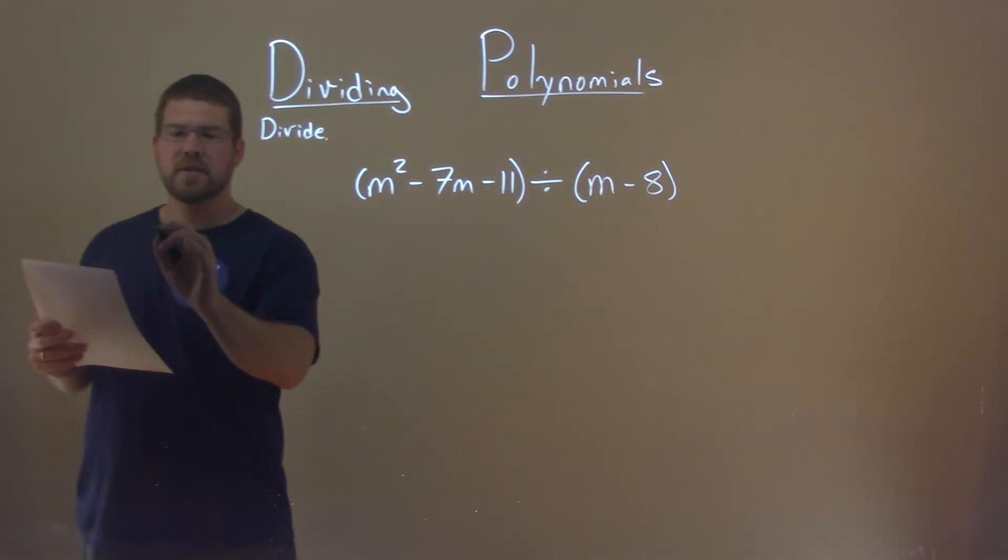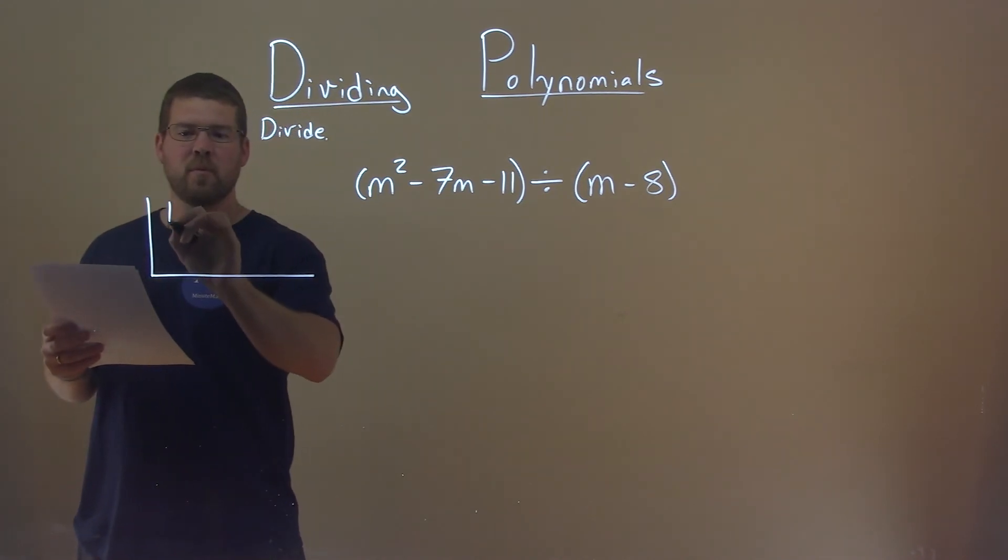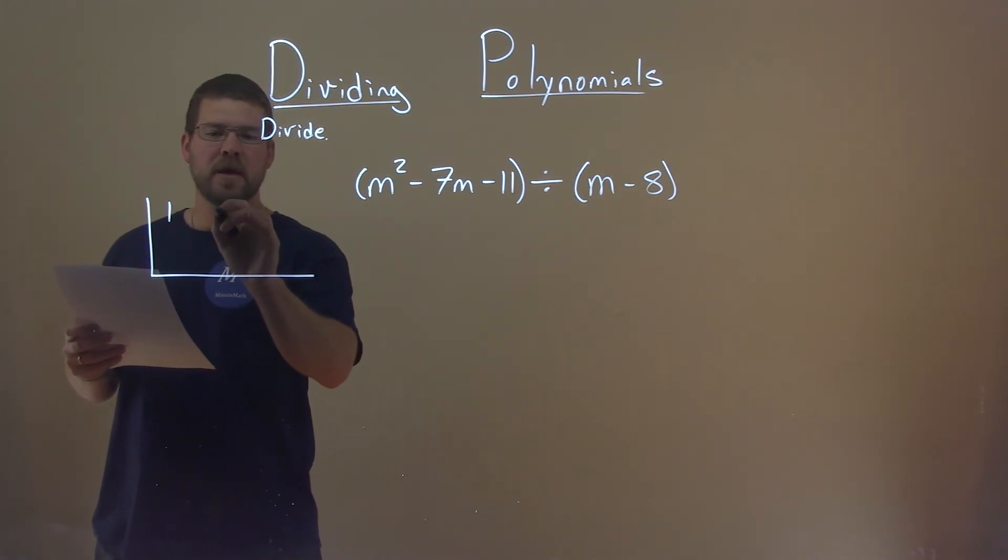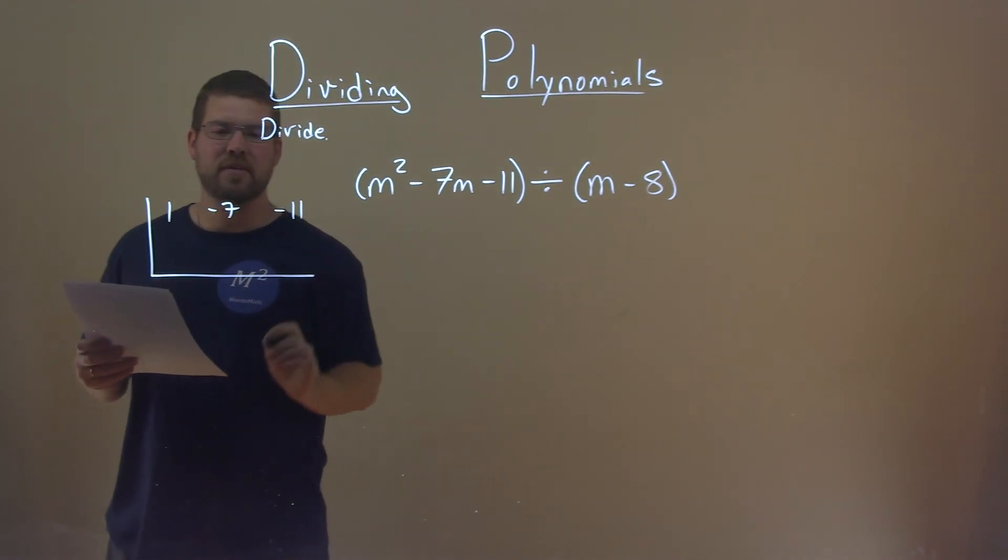So we set up our synthetic division right here. And we're looking at the coefficients of the first part: 1 in front of the m squared, negative 7 in front of the m, and then negative 11 right there.